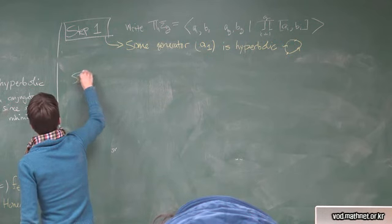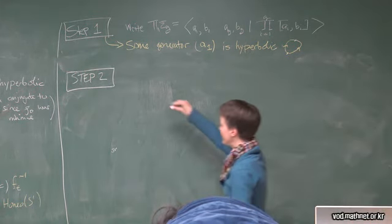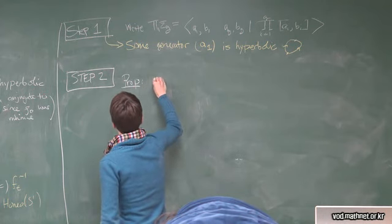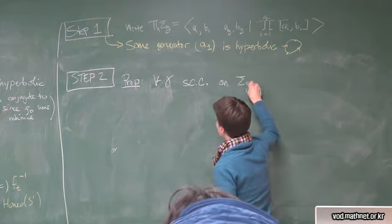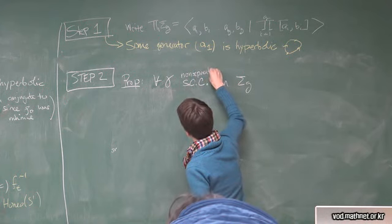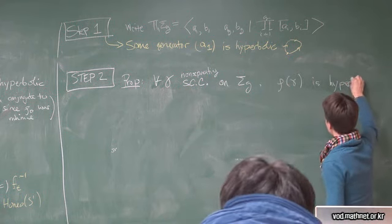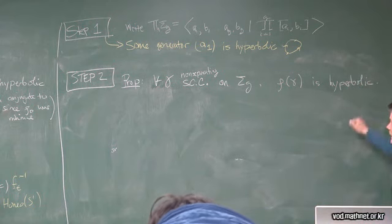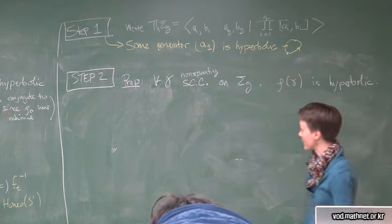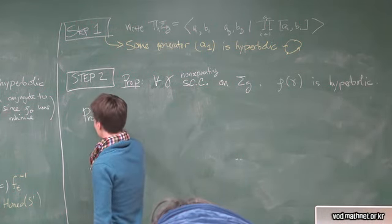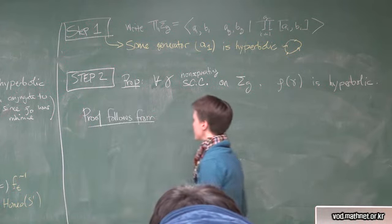Step two. Not only is one generator good, everything is good. So, here's the proposition. For all gamma, a simple closed curve on your surface. Oh, let's say non-separating. Rho of gamma is hyperbolic. So, now you're, once you prove this, you're really looking like the PSL_2(R) discrete faithful representation. So, the proof follows from two parts.